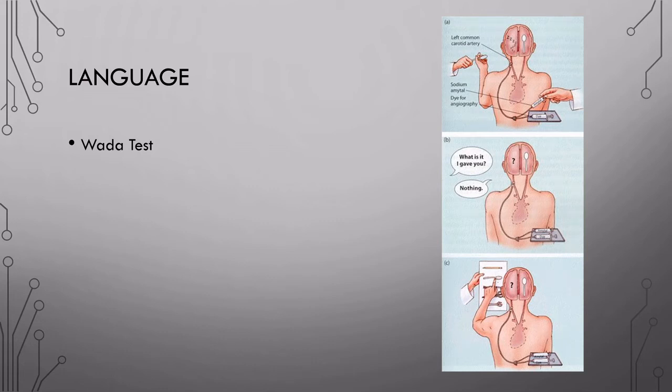Apart from split-brain patients, we have learned about functional differences between the two hemispheres from unilateral brain damage, or brain damage specific to one side of the brain. Experimentally, we can induce this kind of damage for a short amount of time. An example of this is the WADA test.